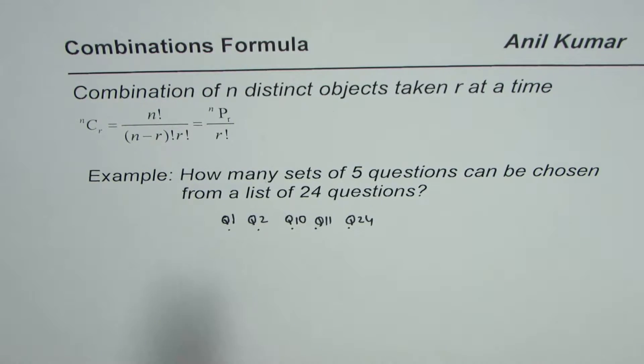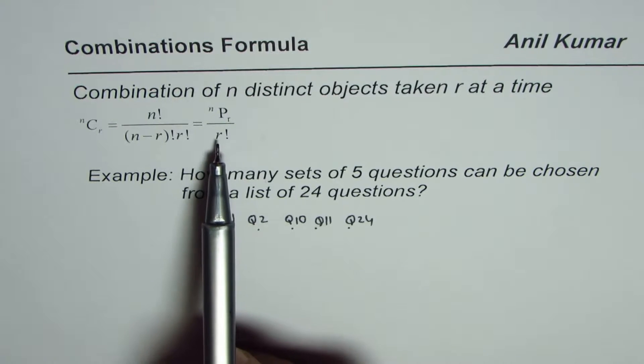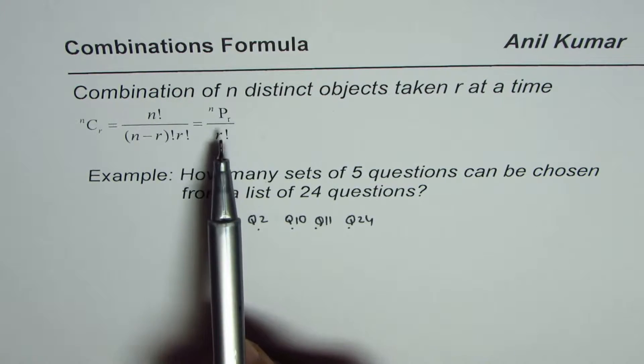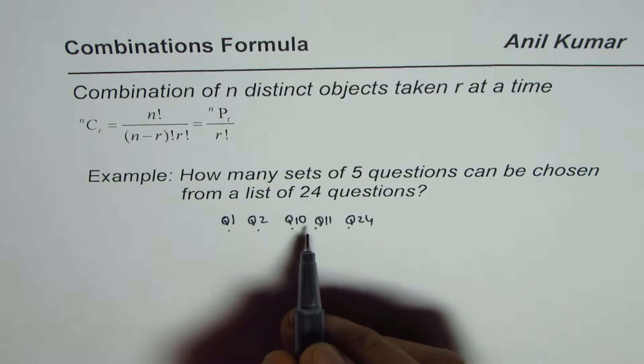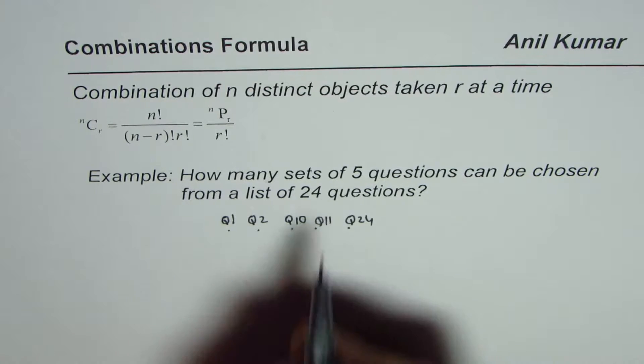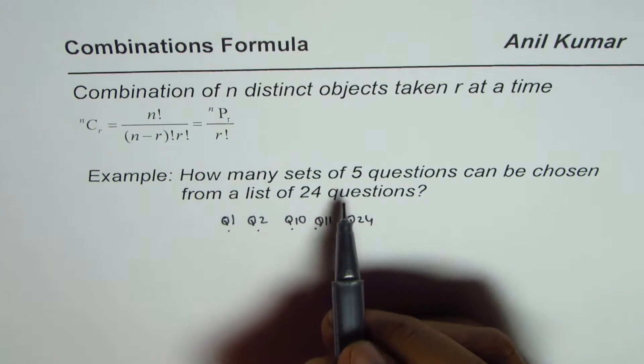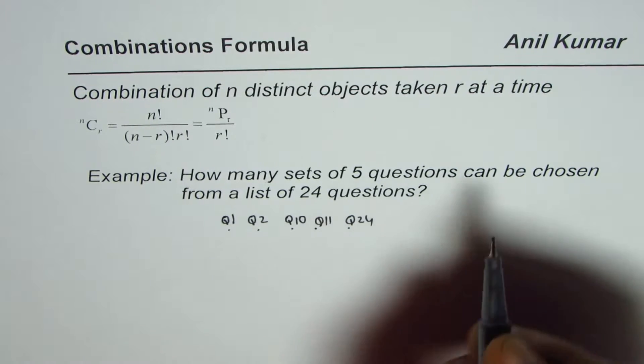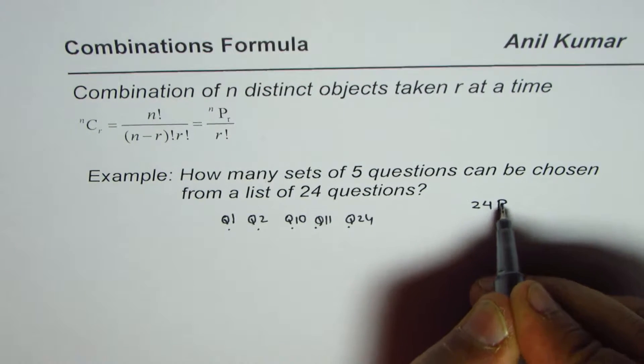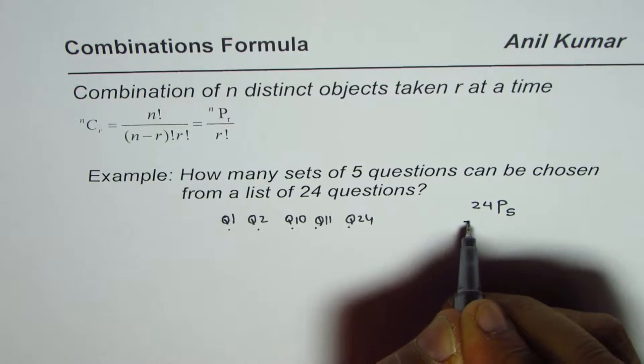Therefore, permutation is where order is important, and since five is the number of questions selected, we divide by five factorial. That is how we relate permutation with combination. We could find the answer by saying we are selecting five out of 24 questions, so it should be 24P5 divided by 5 factorial.